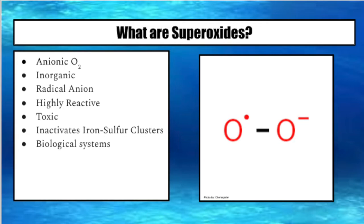Superoxide is an anionic form of O2. It is the product of the one-electron reduction of dioxygen, which is a common occurrence in nature. Superoxide is a free radical and also paramagnetic, meaning it is very lightly attracted to the poles of a magnet but does not retain any magnetism. Superoxide is extremely toxic because it can inactivate iron-sulfur clusters which contain enzymes critical in a wide variety of metabolic pathways. This causes the liberation of iron, which can undergo Fenton chemistry and generate another very reactive chemical, hydroxyl. Superoxide can also initiate lipid peroxidation of polyunsaturated fatty acids in its HO2 form, and can react with both carbonyl compounds and halogenated carbons to create toxic peroxy radicals.